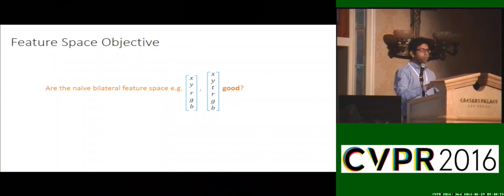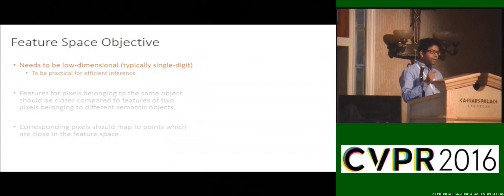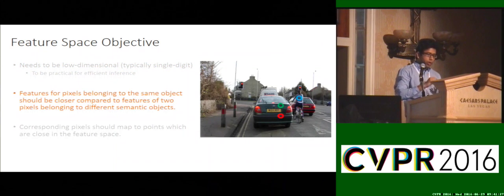But are these naive bilateral space features good for semantic segmentation? Let's first articulate what is a good feature space. The first criteria is that it needs to be low dimensional, because the underlying filtering algorithm can only perform efficiently if the feature dimension is low. The second criteria is that features for pixels belonging to the same object should be closer to one another compared to features for two pixels lying on different objects. As shown in this illustration, the green and red pixels lie on one object, the car, while the blue pixel lies on the cyclist. You want the distance between the green and red features to be smaller compared to the distance between the red and blue features.